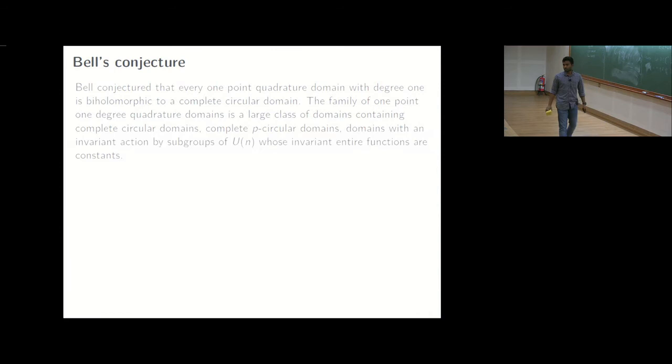This is the class of domains which I don't want to elaborate upon is also another example, class of examples of 1.1 degree quadrature domains wherein there is an automorphism, there is an action by a group which has invariant holomorphic functions as constants and domain is G invariant, there the Bergman kernel is necessarily of the type k at comma zero as a constant. So if anybody is interested, it's there in a work in 2016 by Ning Zhang and Zhu.